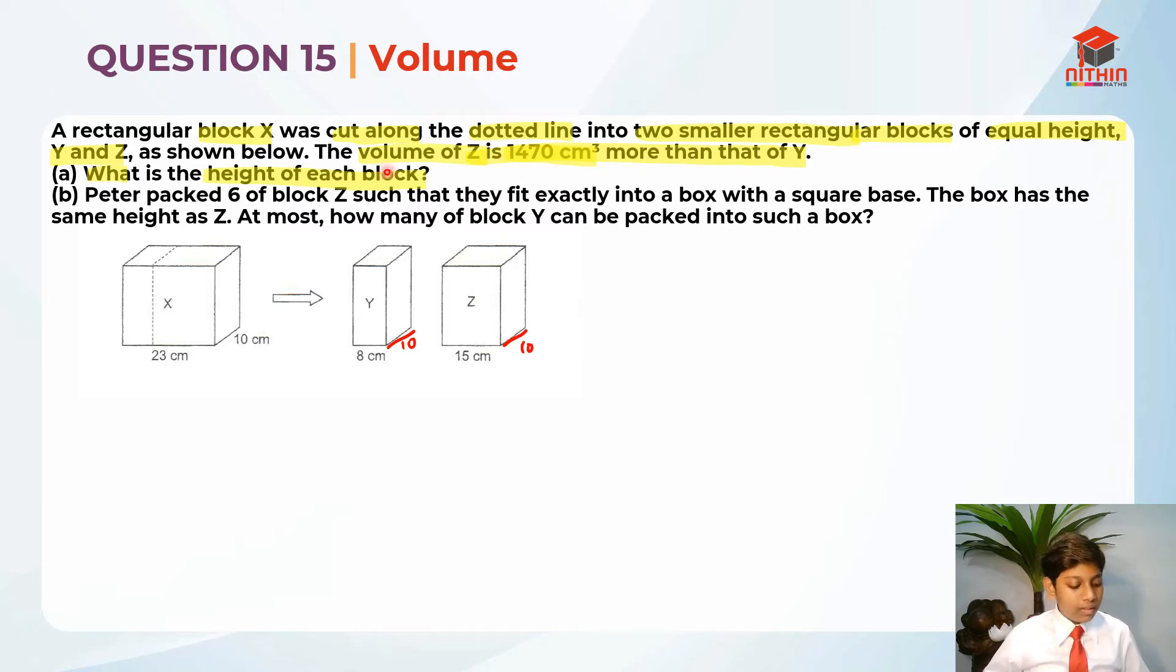But the only volume we have here is Z minus Y. So basically, what we need to do is, since the breadth is constant, I'm going to take 15 cm minus 8 cm, which is 7 cm. So we can draw another block here. So let me just draw something real quick. So see this tiny block. This is another block.